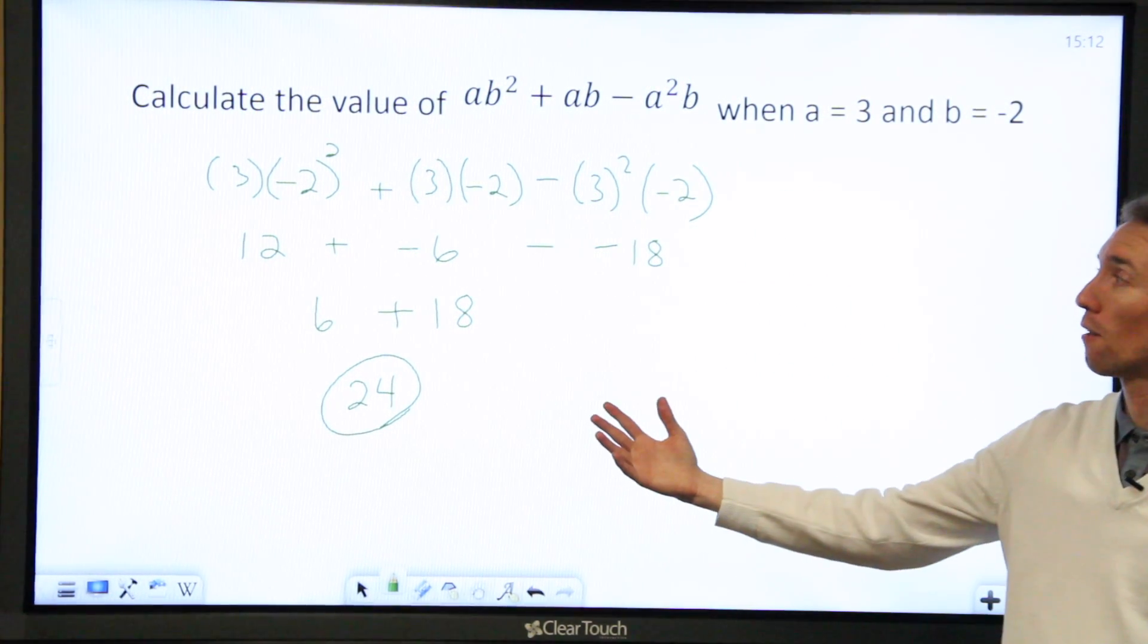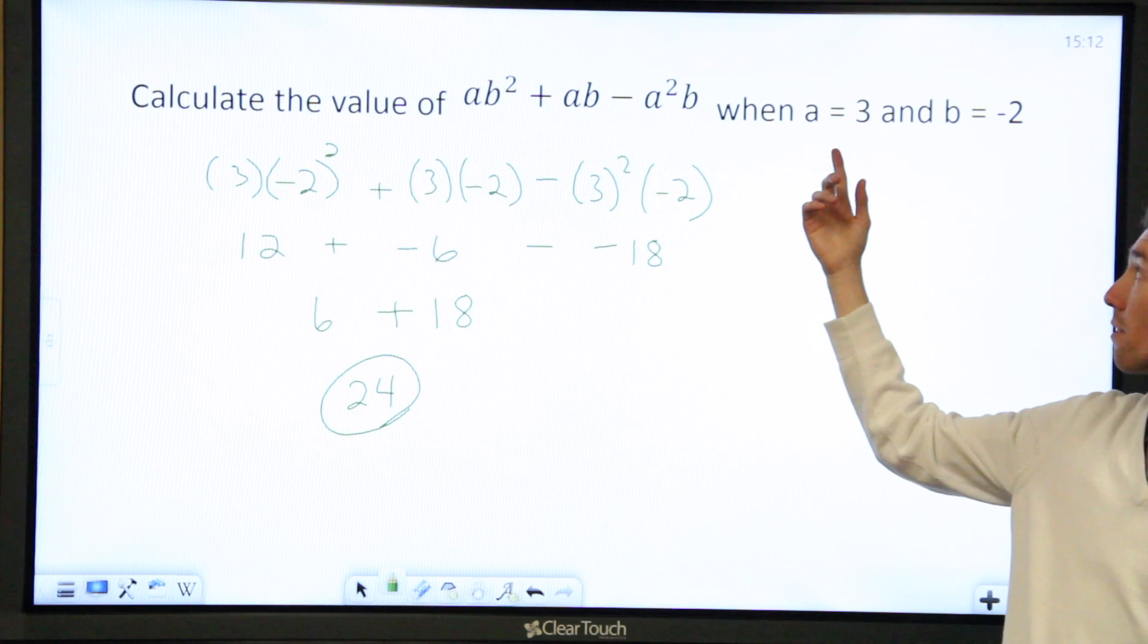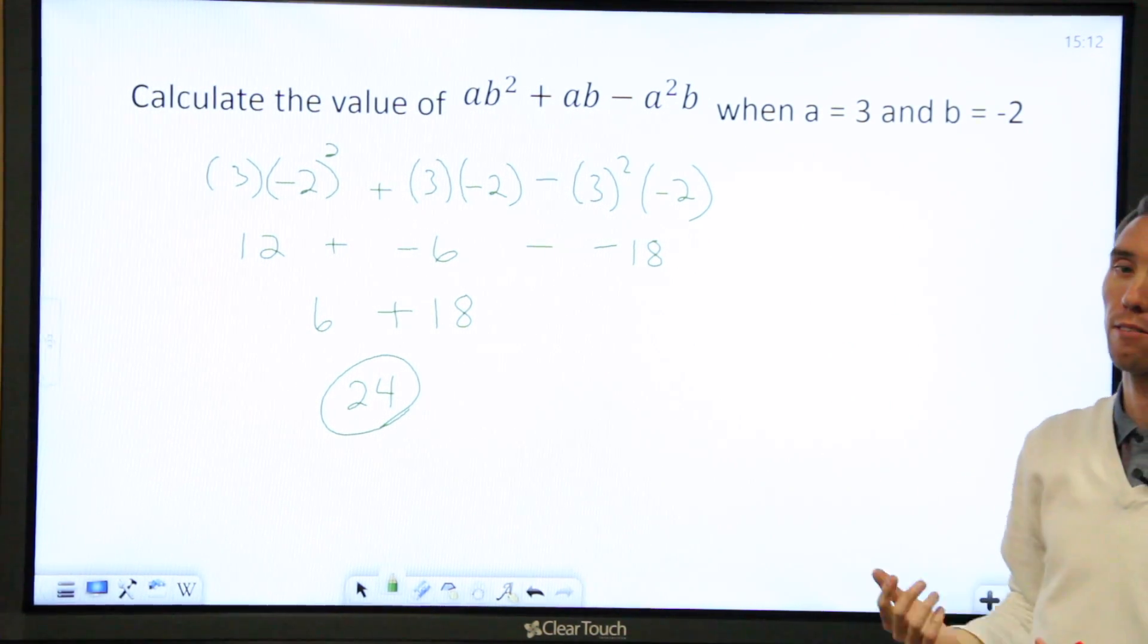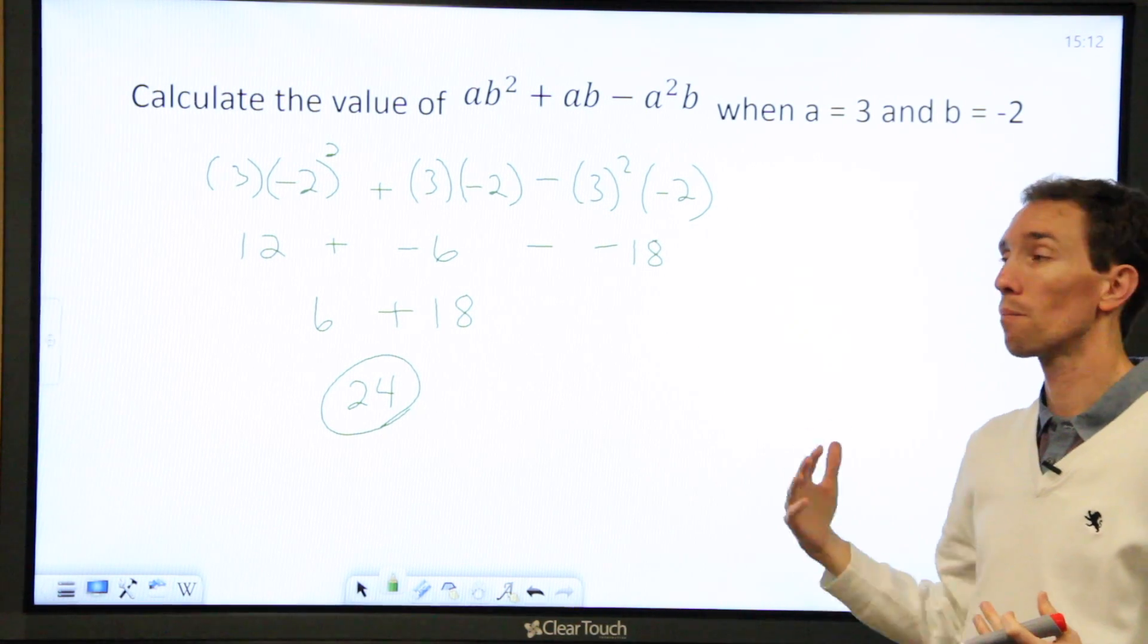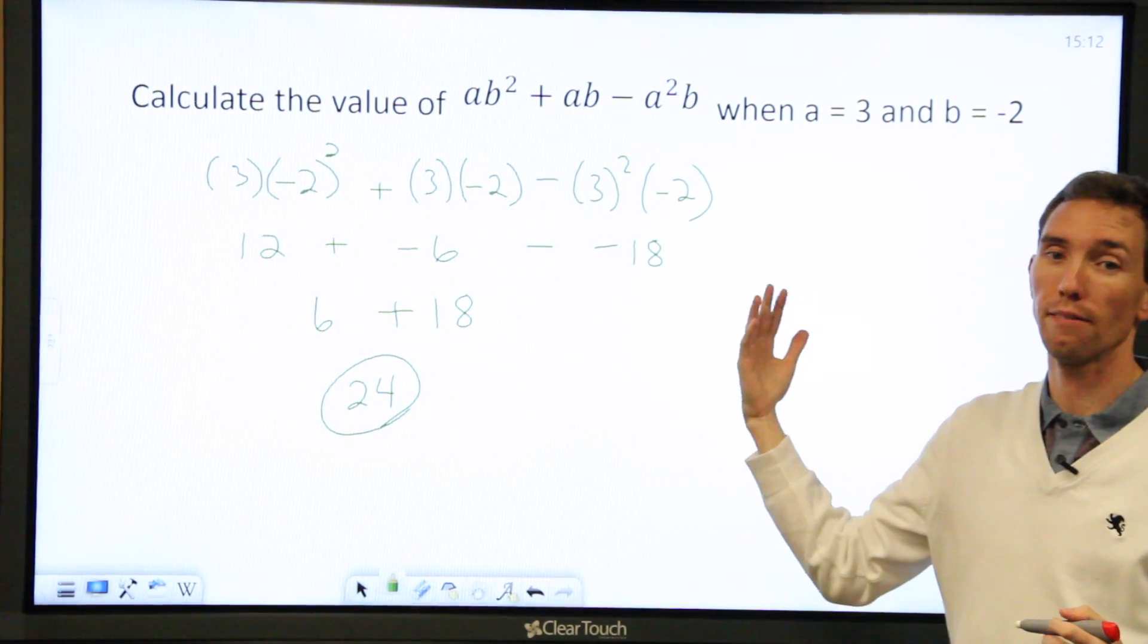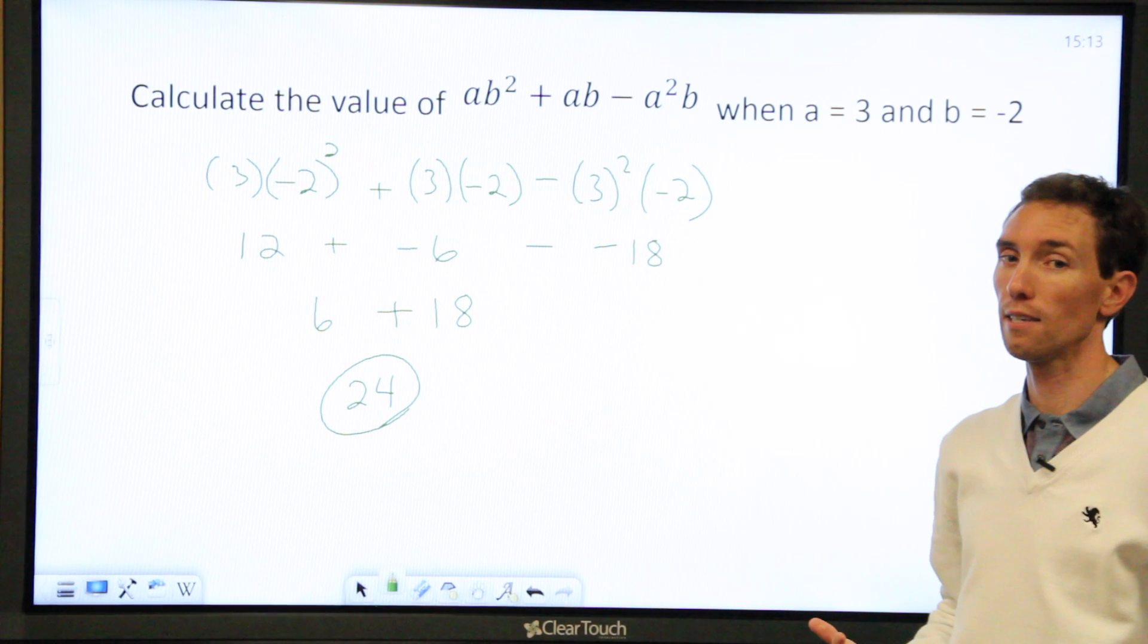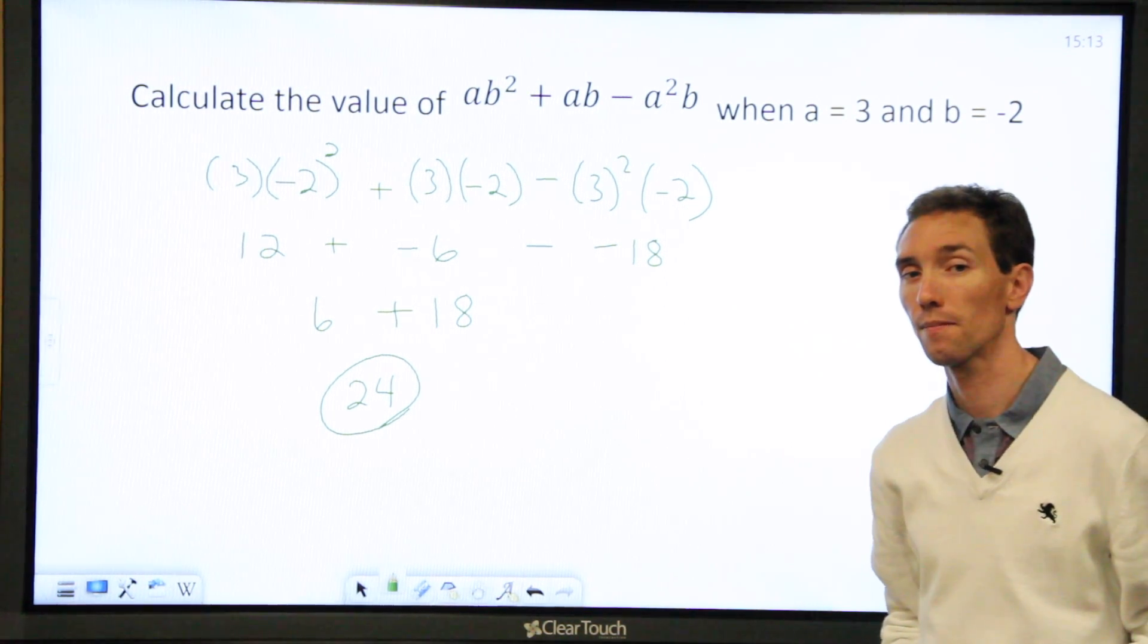That's going to be the final value when I calculate the expression using a is 3 and b is negative 2. I hope this helps when you come to these types of examples. Remember, plug in your variables, plug in the values that they equal, use parentheses, and use order of operations. Good luck.